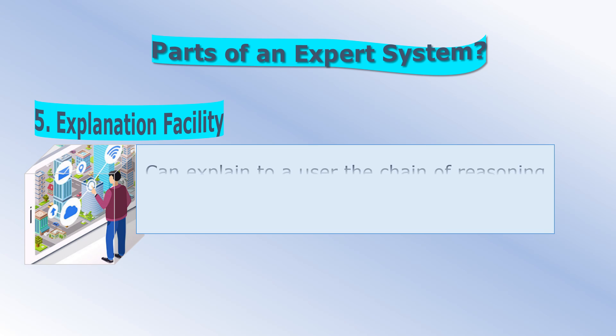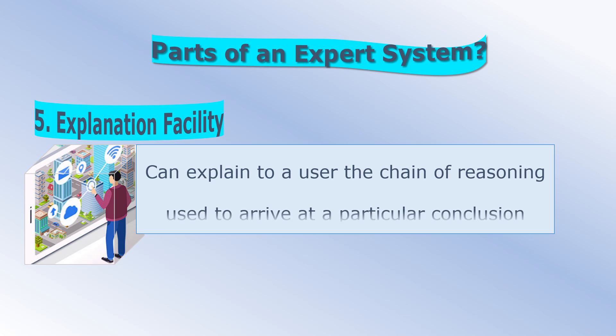The inference engine may also include abilities for explanation, so that it can explain to a user the chain of reasoning used to arrive at a particular conclusion, by tracing back over the firing of rules that resulted in the assertion.